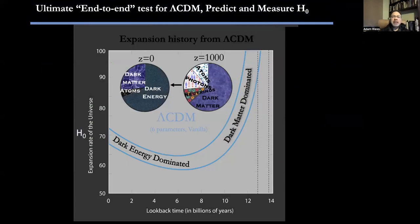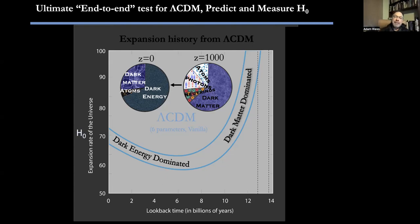The rest of this talk will cover what I think of as the ultimate end-to-end test for Lambda CDM: to predict and measure the expansion rate of the universe in absolute terms. Generically, Lambda CDM starts with the universe dominated by dark matter, neutrinos, photons, and atoms at very high redshift in the early universe.